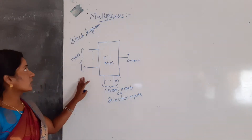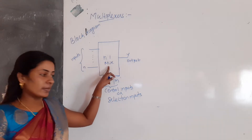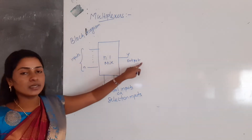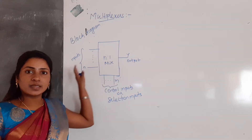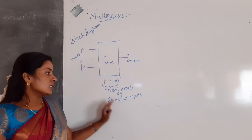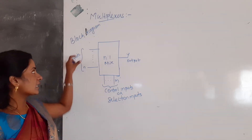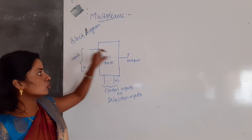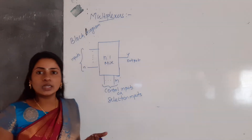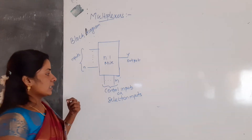This is the block diagram of the multiplexer — an N-to-1 multiplexer, which can be written as MUX. We have N inputs and one output, and N control signals. By applying control signals, we can steer any one of the inputs to the output side. Hence, this multiplexer is also called a data selector.